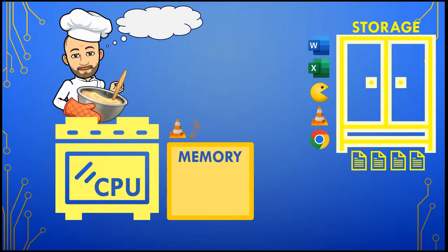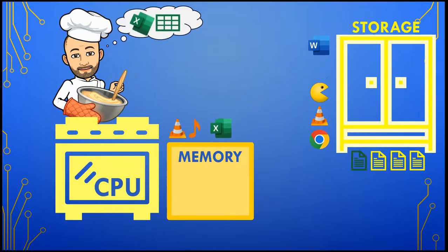If you want to start working on a spreadsheet in Excel, the computer would get the Excel program from the pantry cupboard — I mean storage — and place it on the countertop — I mean memory. It will also fetch the file that you're working on from storage and place that in memory too.